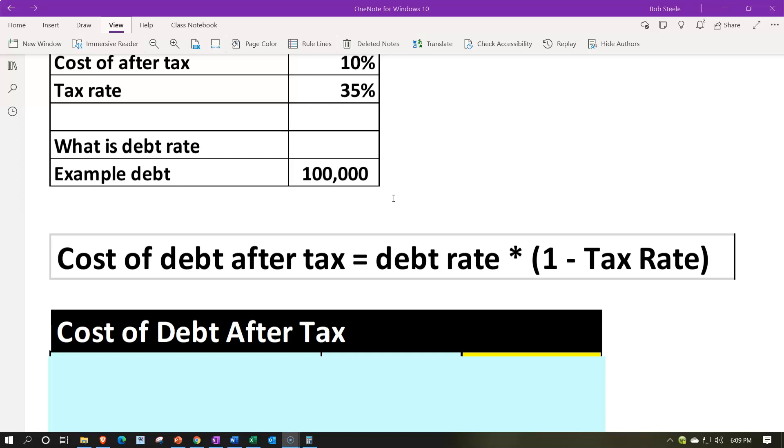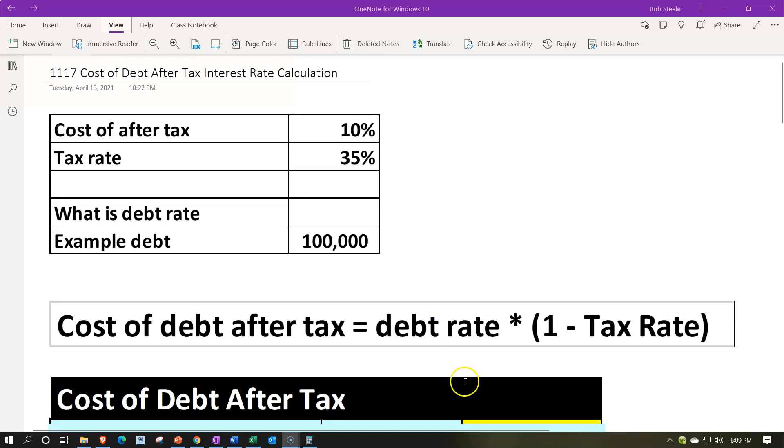Now, if you plug this in algebraically, the thing we're looking for is the debt rate, or kind of like the interest rate, which again, a little bit unusual, but it's just an algebraic equation. So if we have one unknown and we have all the other knowns, we could plug it into our algebraic equation and find the unknown. So the cost of debt after tax is given at the 10%. That would be 10% equals the debt rate times one minus the tax rate, which we do know is 35%. Then you can solve using your algebra for the unknown.